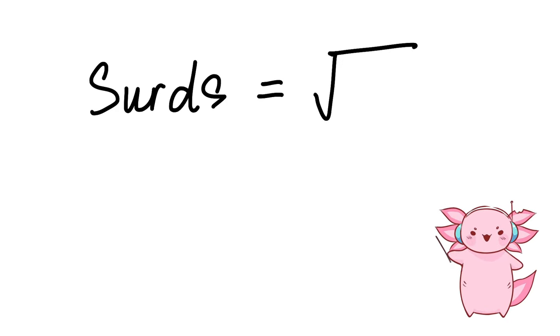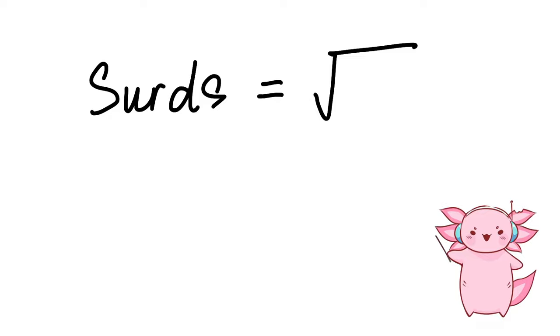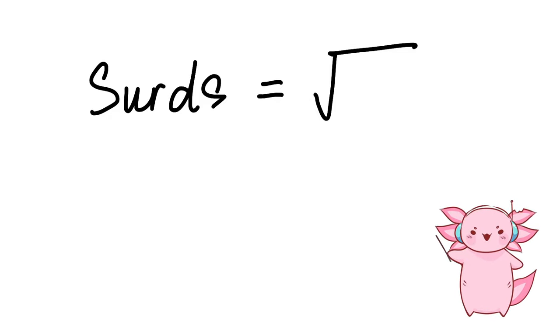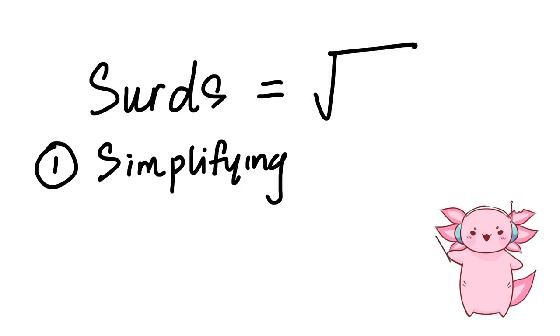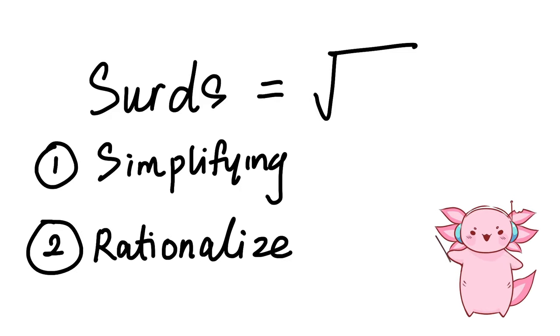Surds is literally just a fancy way of saying square root. In this chapter, there are only two concepts you need to know: number one, simplifying surds, and number two, rationalization.